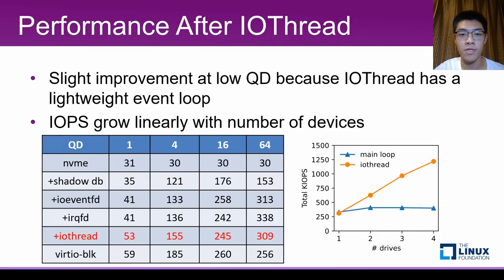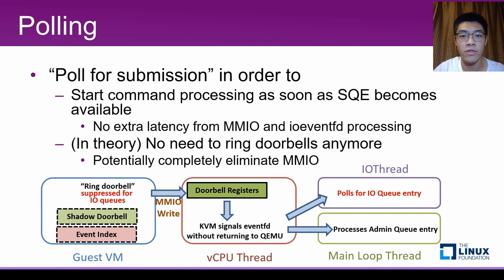With IO thread support, we saw some performance improvements at low queue depth. We suspect this is because the IO thread has a more lightweight event loop. But the most important thing is that we are able to scale linearly with the number of devices. The next and final step is polling support for low-latency NVMe emulation. With polling, we can start processing immediately when the command is available, and we can also eliminate the need for MMIO because we are proactively checking the doorbell. QEMU already has good support for AIO context polling — for NVMe, we only need to provide our own polling functions. The NVMe submission queue poller reads the submission queue tail shadow doorbell registers to check for new submission queue entries.